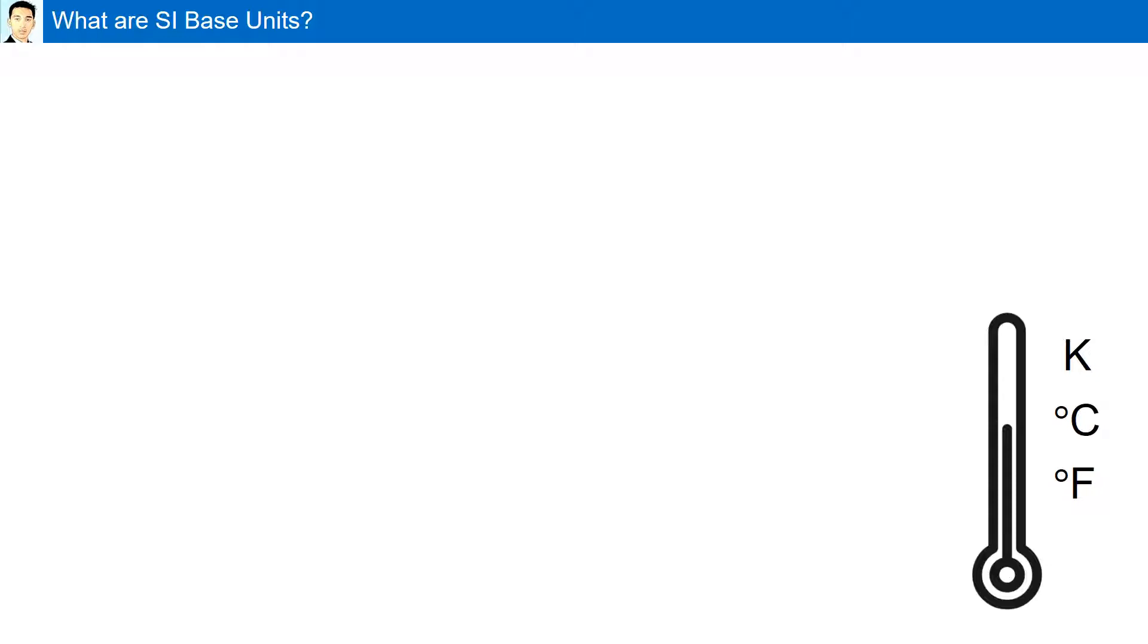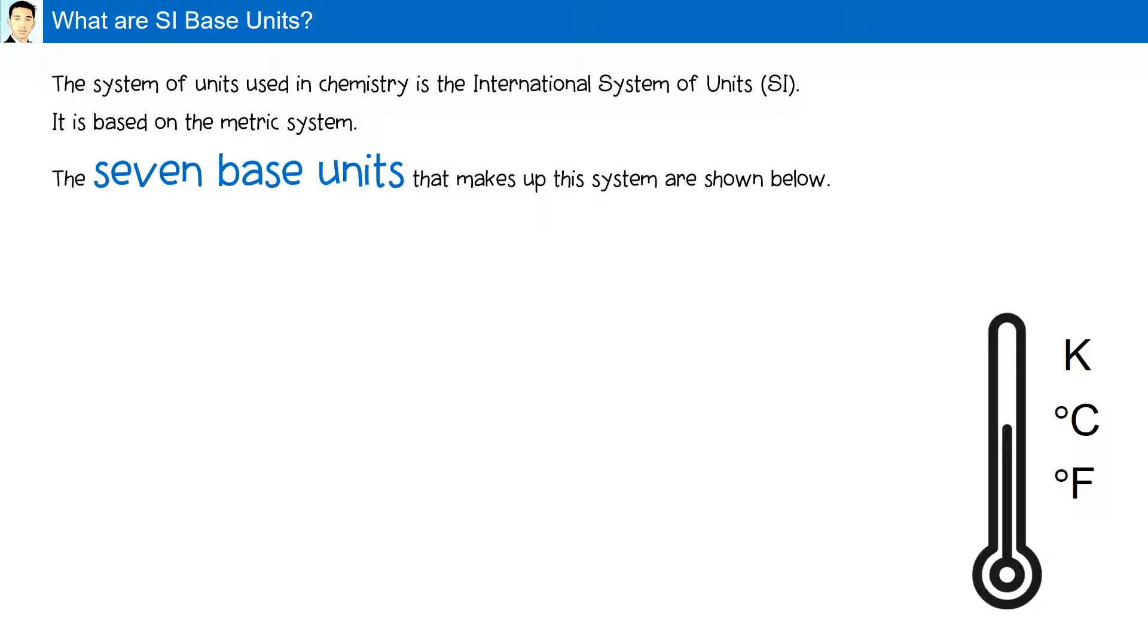What are SI base units? The system of units used in chemistry is the International System of Units, or the SI units. It is based on the metric system. There are seven base units that make up this system.